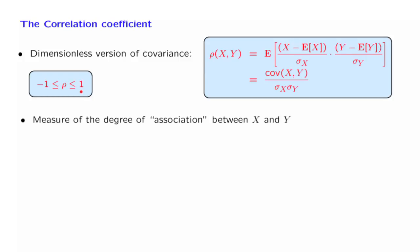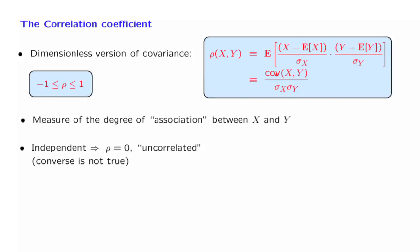To interpret the correlation coefficient, let us look at some extreme cases. Suppose that x and y are independent. In that case, we know that the covariance is going to be equal to 0, and therefore the correlation coefficient is also going to be equal to 0. In that case, we say that the two random variables are uncorrelated. However, the converse statement is not true — we have seen already an example in which we have 0 covariance and therefore 0 correlation, but yet the two random variables were dependent.